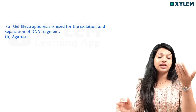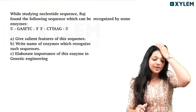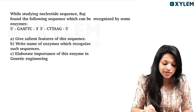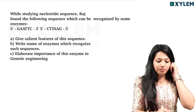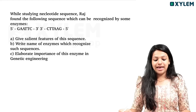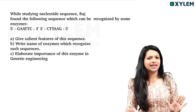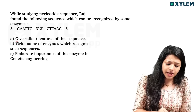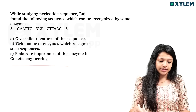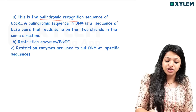What is the use of staining in gel electrophoresis? We will note this. While studying a nucleotide sequence, Raj found the following sequence which can be recognized by some enzymes. 5' to 3': GAATTC. 3' to 5': CTTAAG.